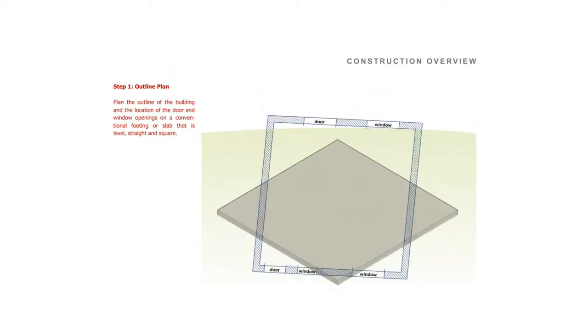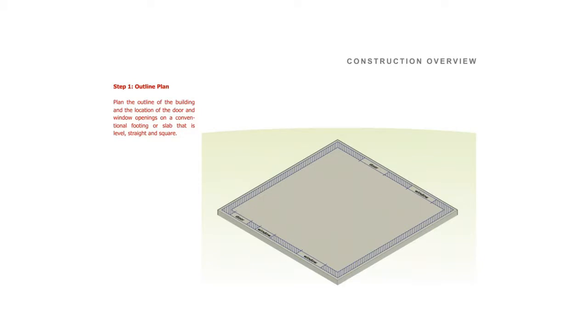Step 1. Outline plan. Plan the outline of the building and the location of the door and window openings on a conventional footing or slab that is level, straight and square. Then line the inside perimeter of the plan with lengths of suitably sized timber. These will act as guides for the initial placement of the Thermohouse elements.